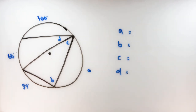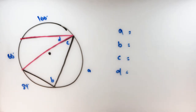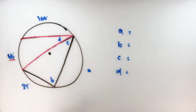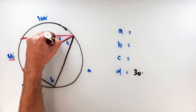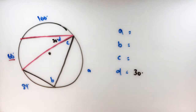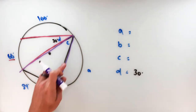Starting with the low-hanging fruit — I've got inscribed angle D with an intercepted arc of 60 degrees. The inscribed angle is always half the arc, so D is half of 60, which is 30 degrees. Next, inscribed angle C has an intercepted arc of 84 degrees. Half of 84 is 42, so angle C is 42 degrees.